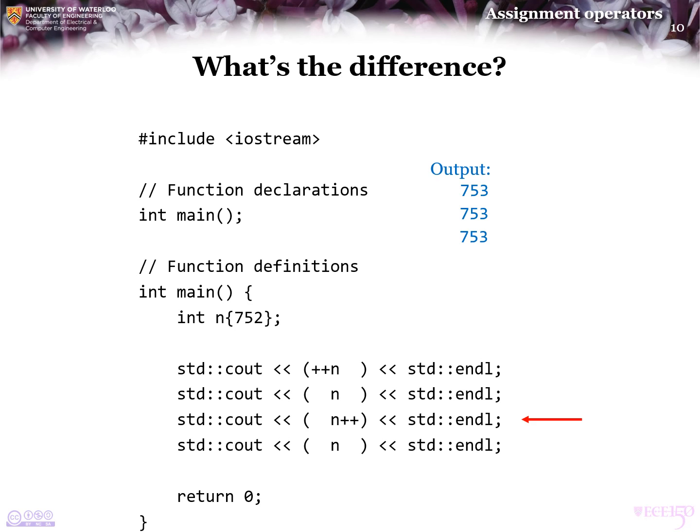However, the actual value of n after this has been incremented, and so now n has the value of 754. So now, when we print the value of n, we do see the value of n equaling 754.